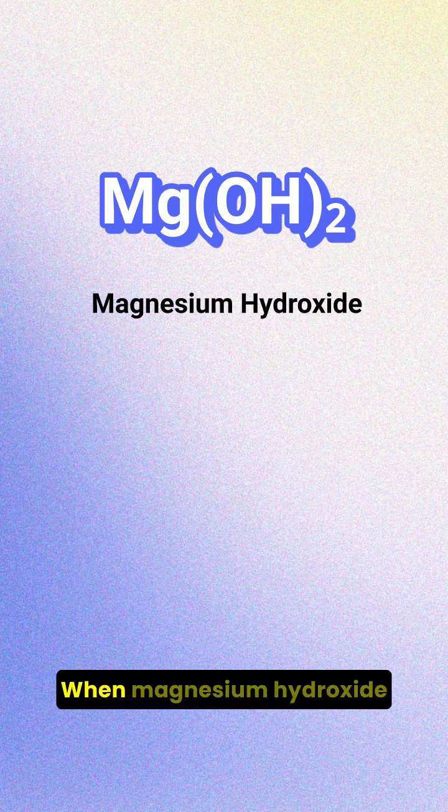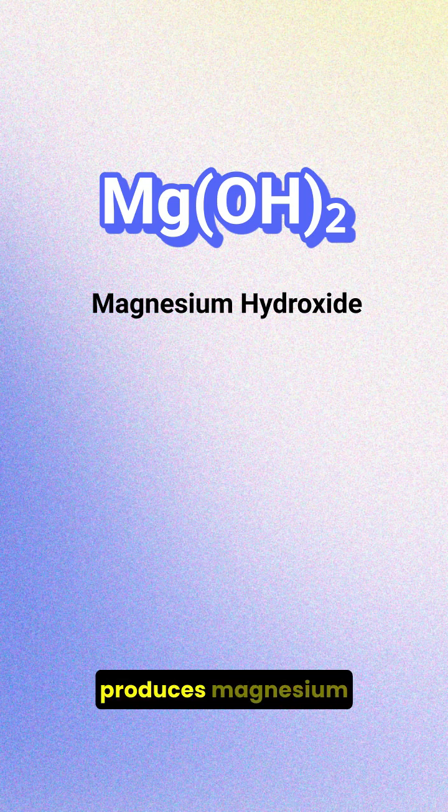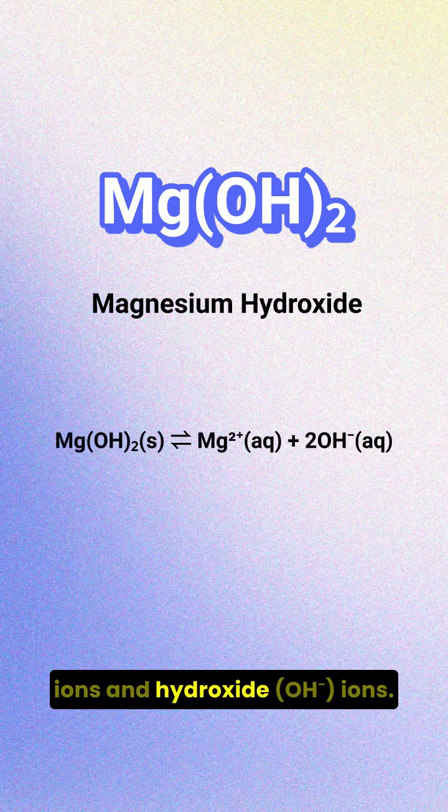Let's work this out together. When magnesium hydroxide dissolves in water, it produces magnesium ions and hydroxide ions.